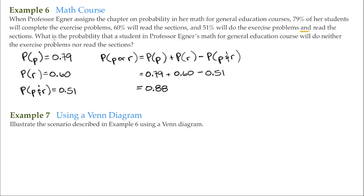However, the problem asks what is the probability that a student will do neither the exercise problems nor the sections. So 88% is the probability that they'll do one or the other or both. Everybody else is not going to do anything — that's the complement. The complement is 1 minus 0.88, so we read these carefully: we don't want this group, we want everybody else — those who don't do anything — and that comes out to be 12%.